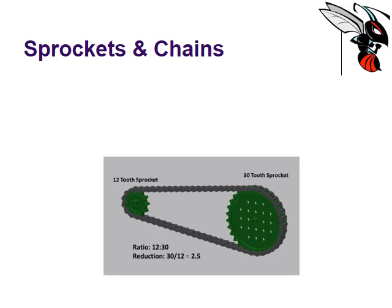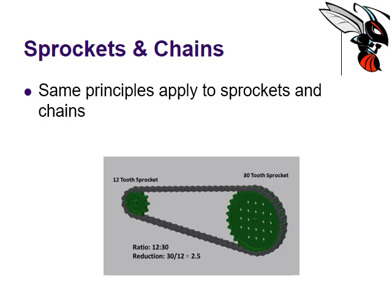You can also apply the same principles to sprockets and chains, and we have sprockets and chains in class. In this system, we've got a 12 tooth sprocket to a 30 tooth sprocket — exactly the same as a typical gear system. We've got a 12 to 30 ratio, so the reduction is 2.5. You've got 2.5 times the mechanical advantage. You can actually use chains and sprockets to span large distances without having to use a whole bunch of idler gears.